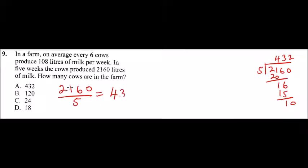You minus, you get one, drop zero, you get two. So this means that in a week the cows were producing 432 liters. Now, because a set of six cows were producing 108 liters...